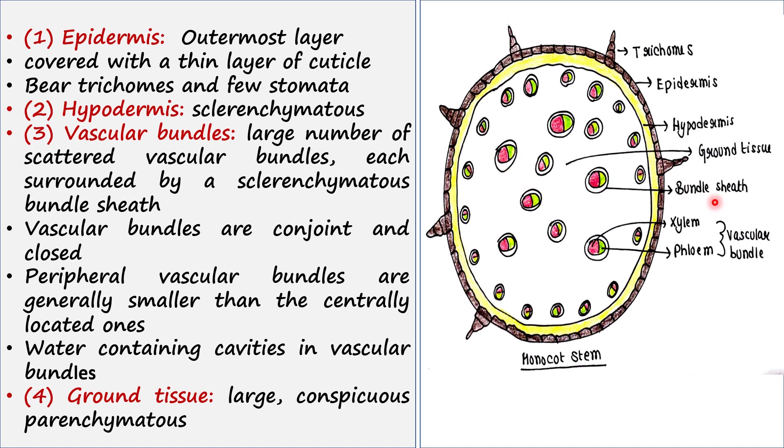This bundle sheath contains sclerenchyma cells. These vascular bundles are conjoint, that means the vascular bundle contains both xylem and phloem. The xylem is this red color one and the phloem is this green color one, both joined together.